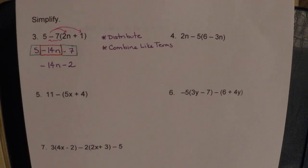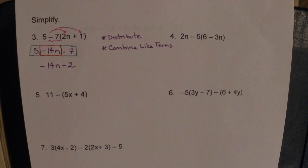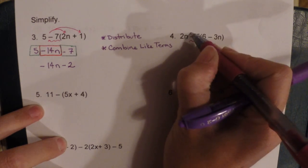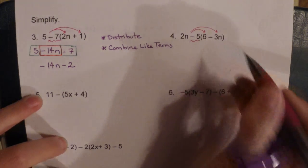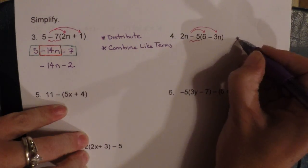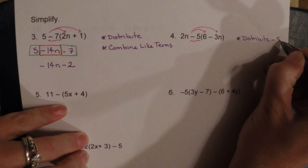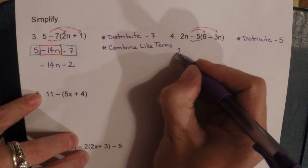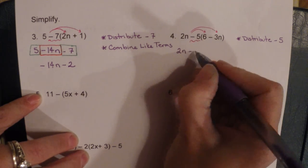Now let's look at number four. Watch your signs — the number you're going to be distributing is negative five. Make sure when you do the second half, this is a negative three n. The first step is to distribute negative five. We bring the 2n down, then negative five times positive six gives negative 30.